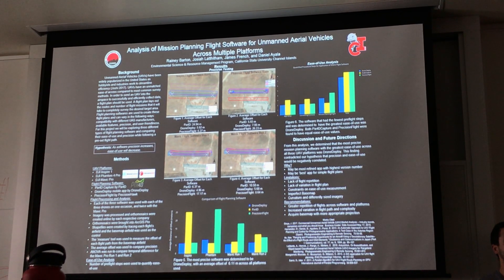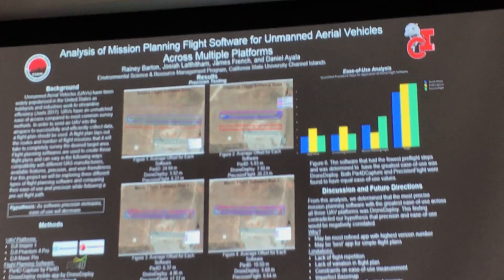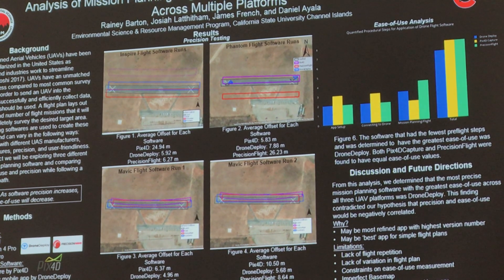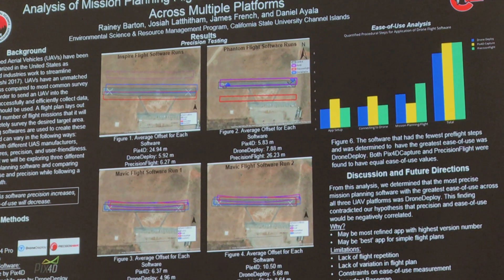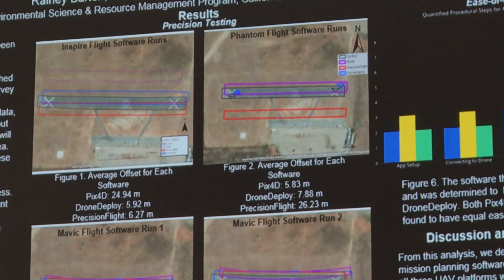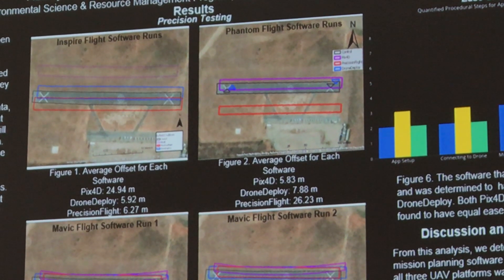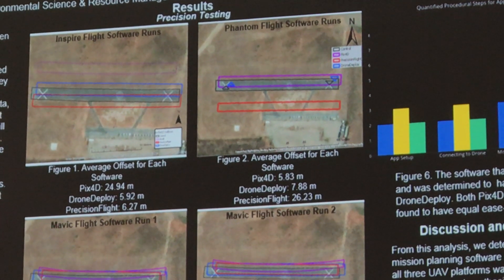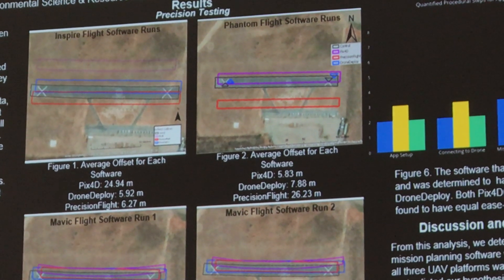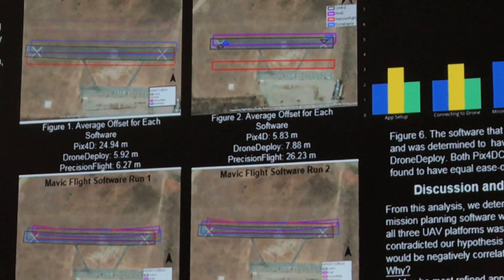These images are extrapolated data — the ortho-mosaics that we inputted into ArcGIS Pro. To calculate the offset, we drew lines around the airstrip. The black line indicates the base map, the blue line indicates Drone Deploy, the red one is Precision Flight, and the purple one is Pix4u. We used the measure tool to measure from the top corners to the bottom corners. For the Phantom flight, for some reason, the Drone Deploy run didn't capture the whole airstrip.